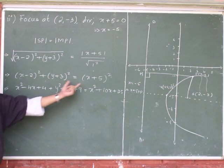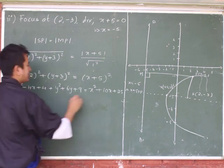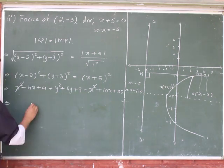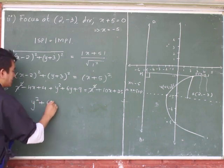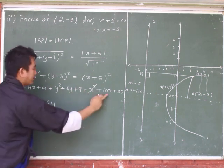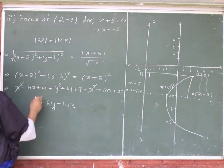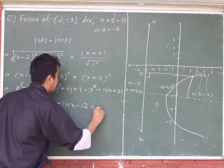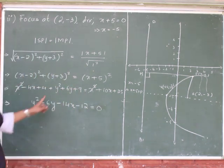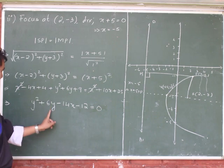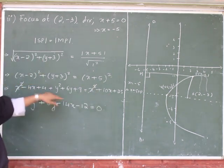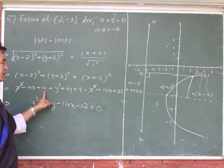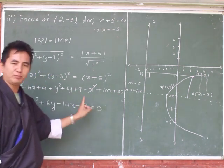The x squared terms cancel on both sides. Collecting the remaining terms: y squared plus 6y, then negative 4x minus 10x gives negative 14x. For the constants: 9 plus 4 is 13, and 13 minus 25 equals negative 12. So we get y squared plus 6y minus 14x minus 12 equals 0.